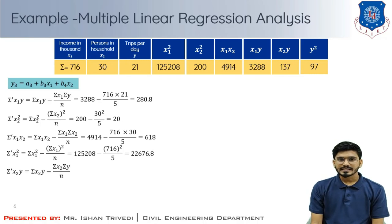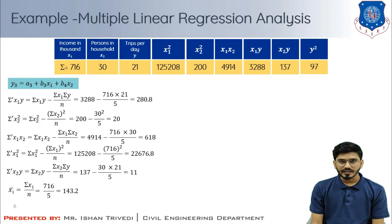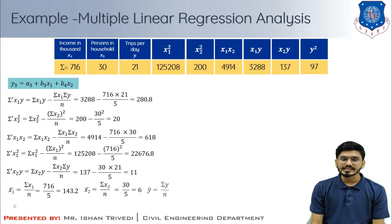Next, sigma'(x2y) = sigma(x2y) - sigma(x2)*sigma(y)/n = 11. The mean values are: x1 bar = sigma(x1)/n = 716/5 = 143.2, x2 bar = sigma(x2)/n = 30/5 = 6, and y bar = sigma(y)/n = 21/5 = 4.2.